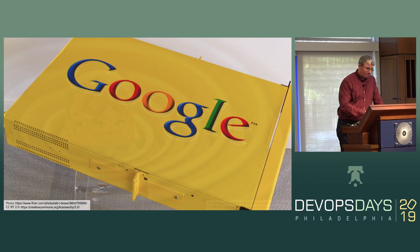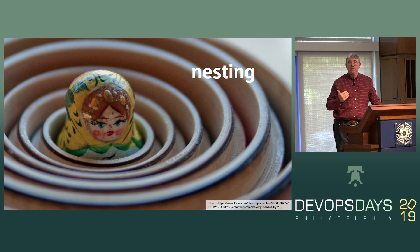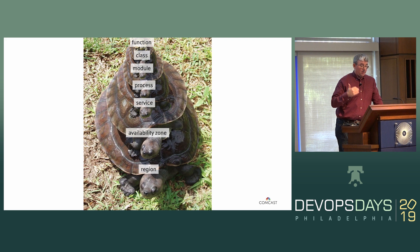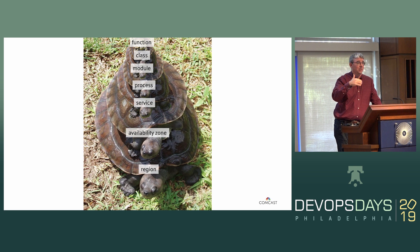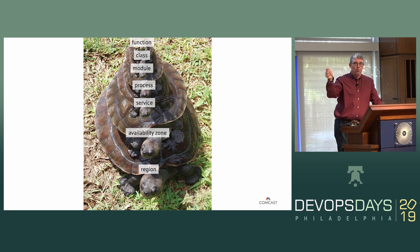Complex systems often exhibit nesting behavior, which means the components that make up a complex system are often complex systems themselves. In a technical setting, it is turtles all the way down — I've got a region of my cloud provider, which is a complex system; an availability zone within that region is a complex system; a particular service, which may be composed of multiple microservices; even a given microservice may have multiple processes or threads. We can go all the way down and understand that lots of things exhibit these behaviors of complex systems.